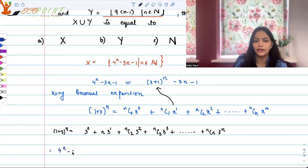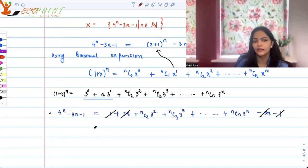So that becomes 1 + 3n + nC2·3^2 + nC3·3^3 + so on till nCn·3^n minus 3n minus 1. So which means that 1 and 3n cancels from here and all I'm left with is 9·nC2 + 27·nC3 + so on till nCn·3^n.